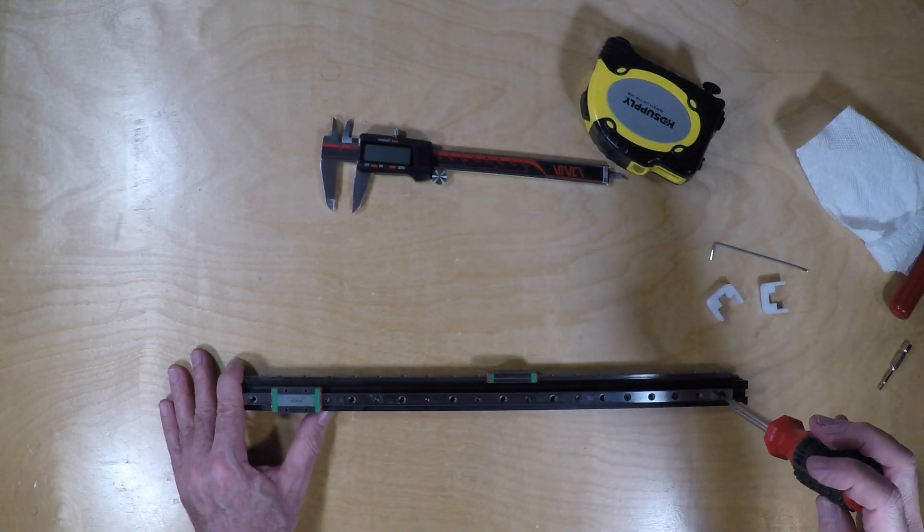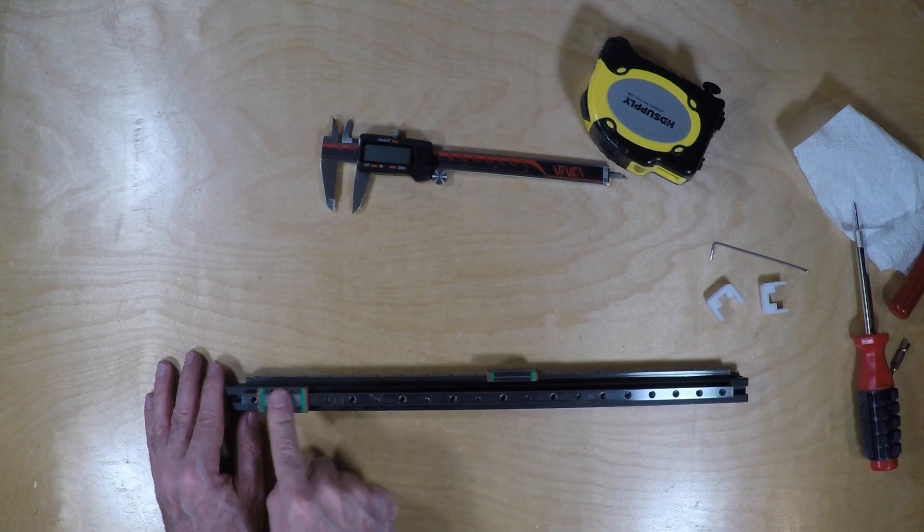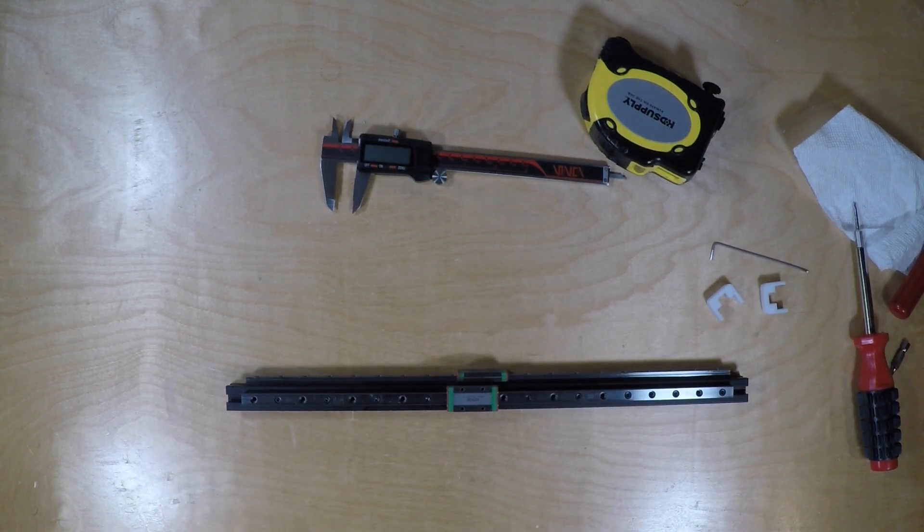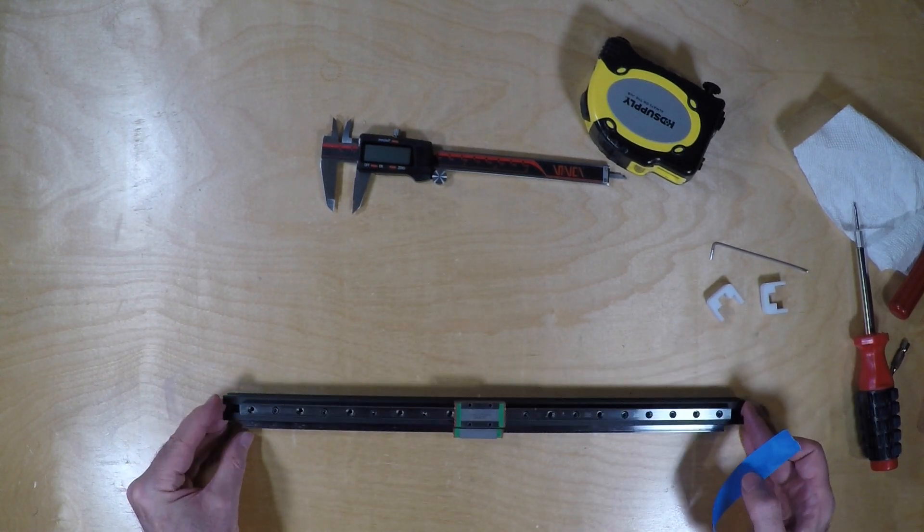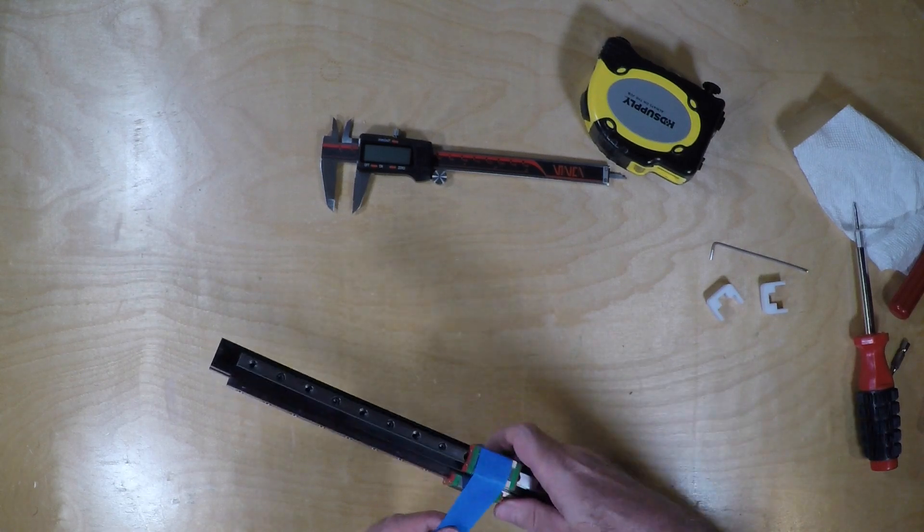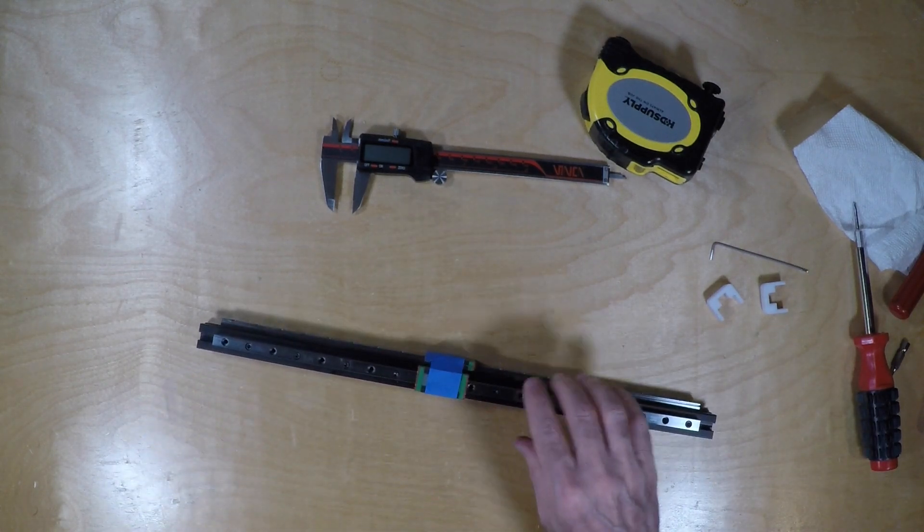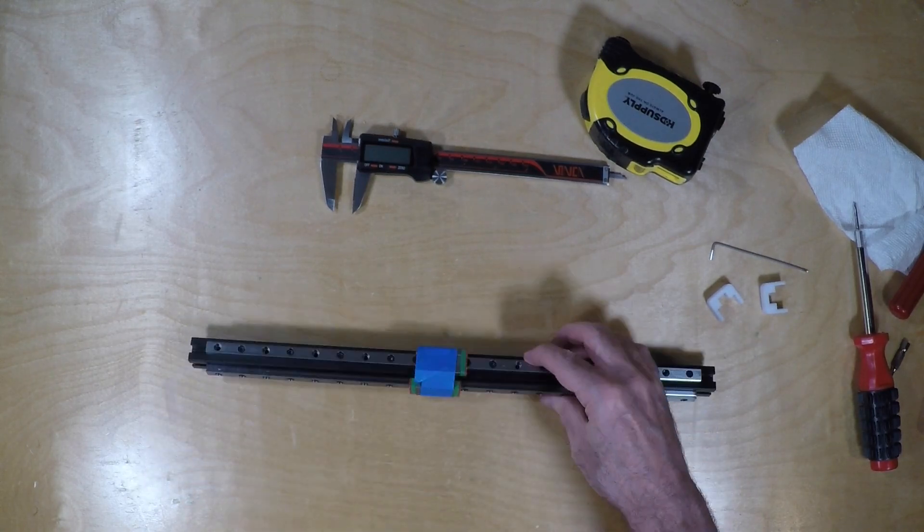Once you've added that rail, flip it a quarter turn over and go ahead and add the second rail. Because I don't want the rail carriages to slide off, I'm using some blue painters tape here to tape them in place so they won't slide around by mistake.